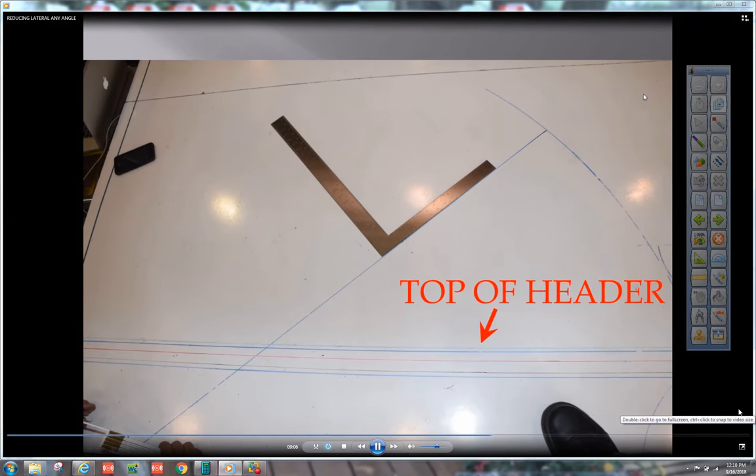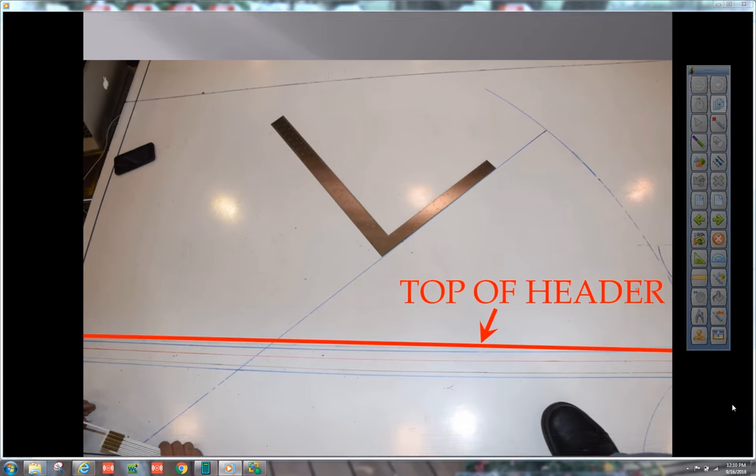You see all these lines were brought over. That was the top of the header. And all the other lines should be parallel to that. Those are the drop downs. That's the center line of the branch.